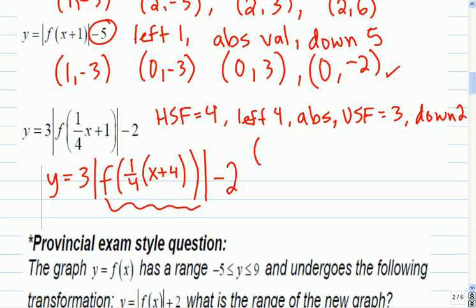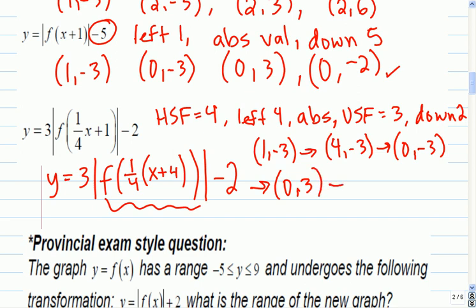So if I track that point, which is 1, negative 3. So if I, horizontal stretch will be 4, negative 3. Left by 4, it's going to be 0, negative 3. Absolute value will be 0, 3. Vertical stretch will be 0, 9. And down 2 will bring me to 0, 7.